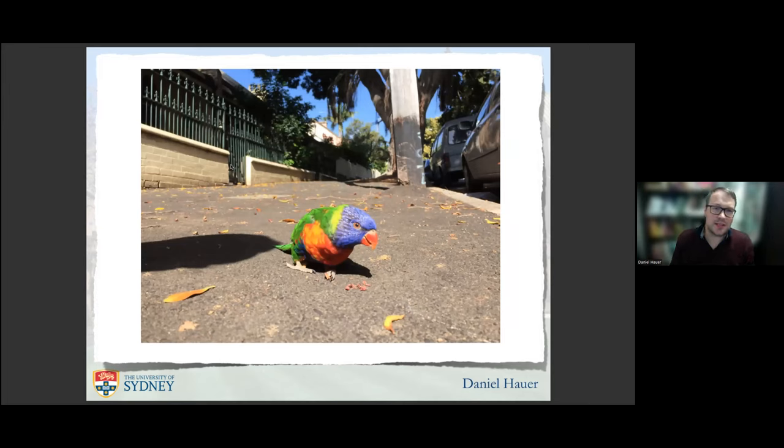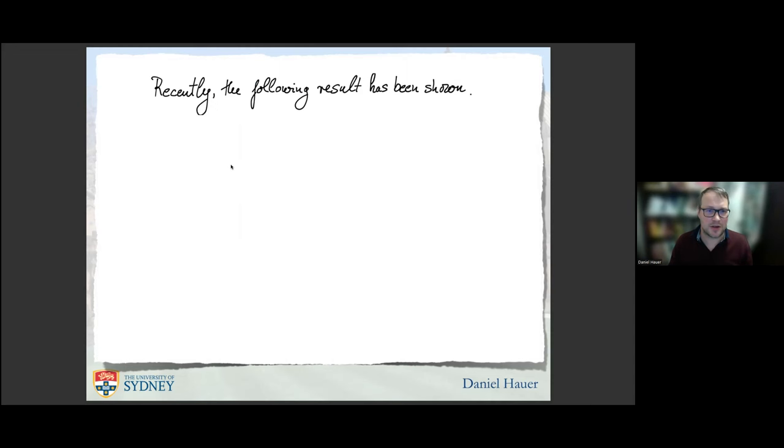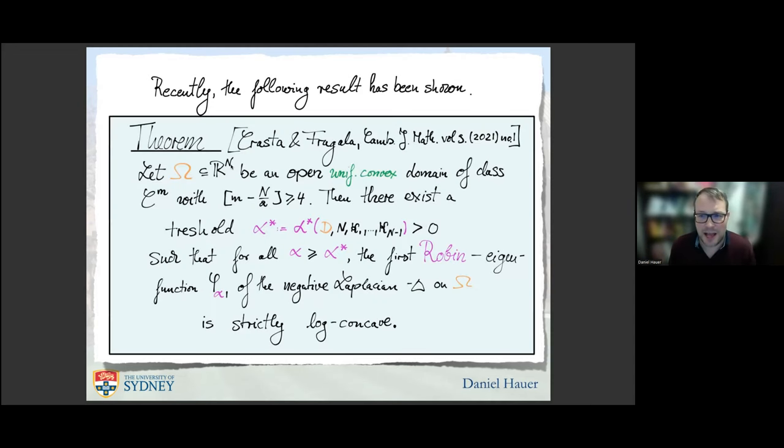Now it's interesting to see what happens at the other extreme when alpha tends to infinity. The Robin eigenfunctions converge to the Dirichlet eigenfunction. Recently, Grazio Crasta and Ilaria Fragalà proved the existence of such a threshold. When omega is open and uniformly convex and the boundary is sufficiently smooth, there exists such a threshold of alpha such that for all alpha larger than this threshold, the Robin eigenfunction of the negative Laplace operator is strictly log-concave. They proved exactly the opposite. I think this is very nice. They completed the picture.